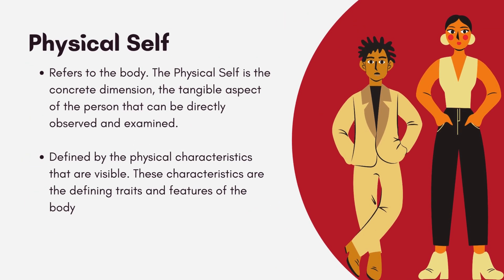Let's begin by defining what physical self is. The physical self refers to our body — it is the concrete dimension, the tangible aspect of the person that can be directly observed and examined. The physical self is defined by the physical characteristics that are visible.